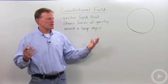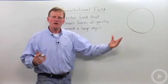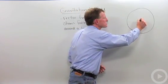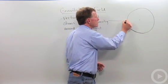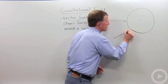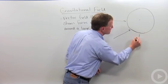So we take a large object like planet Earth. We know that gravity will always pull objects towards the center of the mass. From this direction, it'll pull that way. From this direction, it'll pull that way. From this direction, and so on.